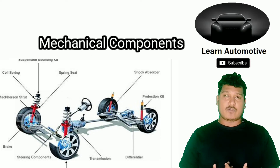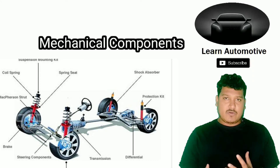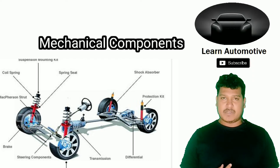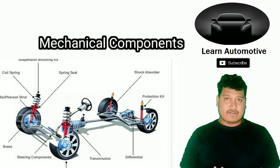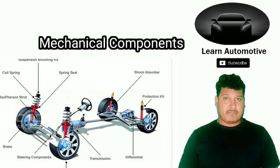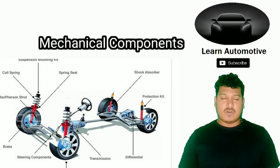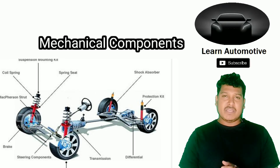Mechanical is one of the biggest backbones of any automotive car. We have numerous components, but the major and common ones we deal with include: accelerator, brake, clutch, gear, differentials, transmission, mufflers, electric mufflers, radiators, and compressors, and so on.